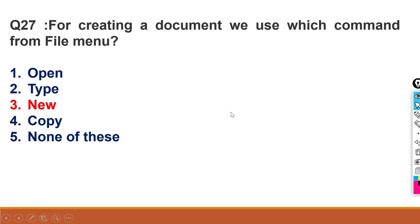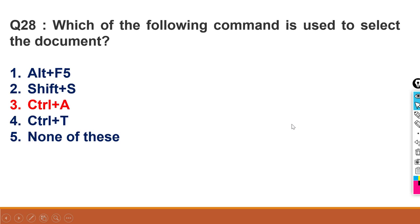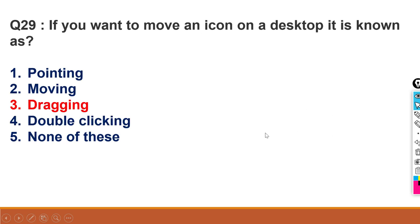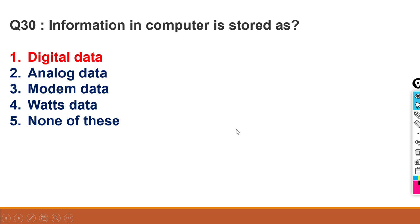For creating a document, we use which command from file menu? If we want to create a document, we choose new command. Click on new and then you will open a new document or create. Which of the following command is used to select a document? If we want to select any document, then we press Ctrl plus A and that document will be selected. If you want to move an icon on desktop, it is known as dragging. Information in computer is stored as digital data. How do we give information? We give information in the analog data form, and we give our computer analog data.